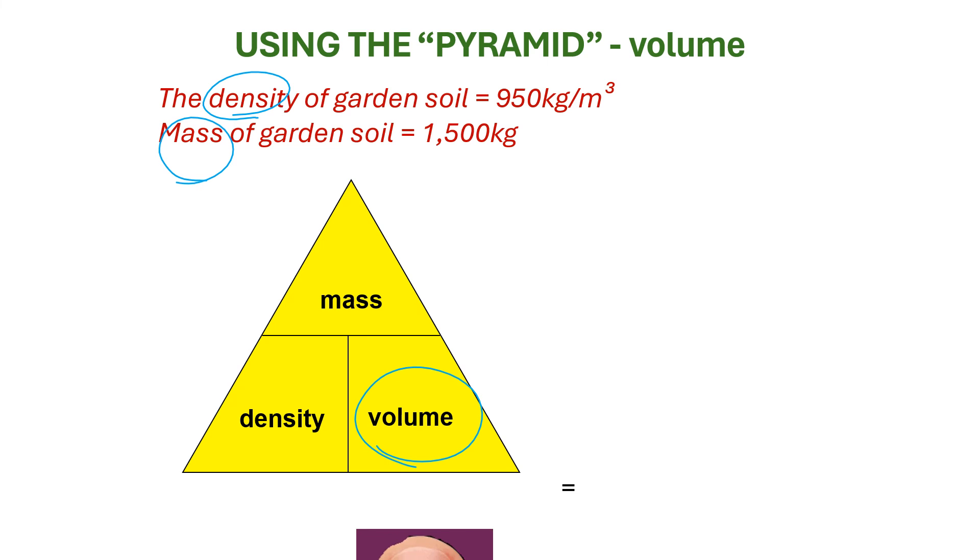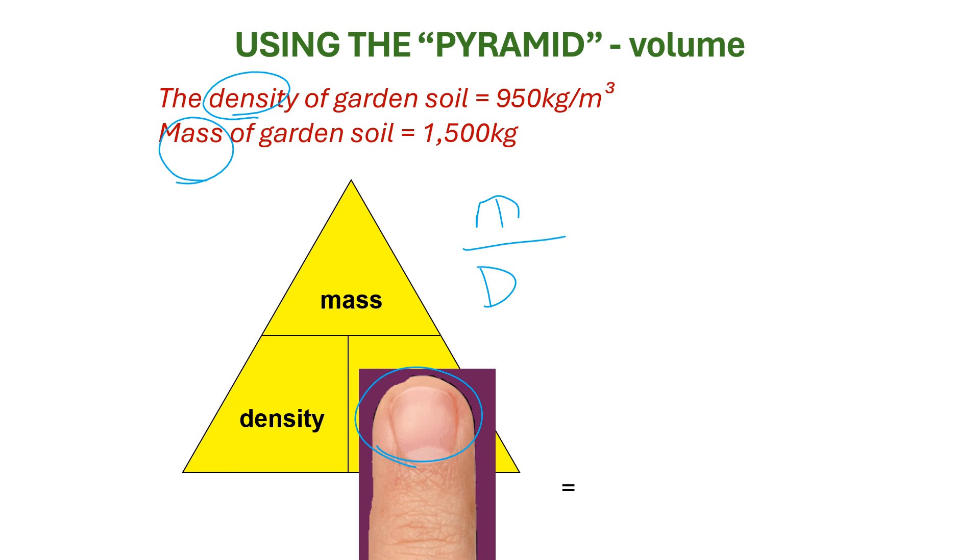So we use the finger to cover that up. And we can see that this has created a fraction. Our numerator is mass. Our denominator is density. We're trying to calculate volume. So on our calculator, we divide our 1500 kilograms worth of soil. We divide that by their density, 950.